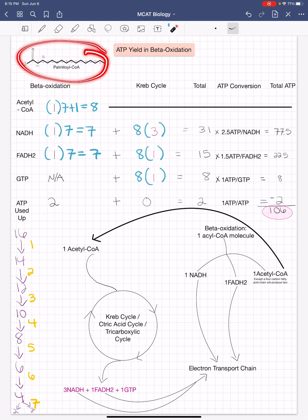For palmitoyl CoA, since it has 16 carbons on its chain, each time it goes through beta oxidation it will lose two carbons at a time. So it will go from a 16-carbon chain to a 14-carbon chain to a 12-carbon chain, and so forth.